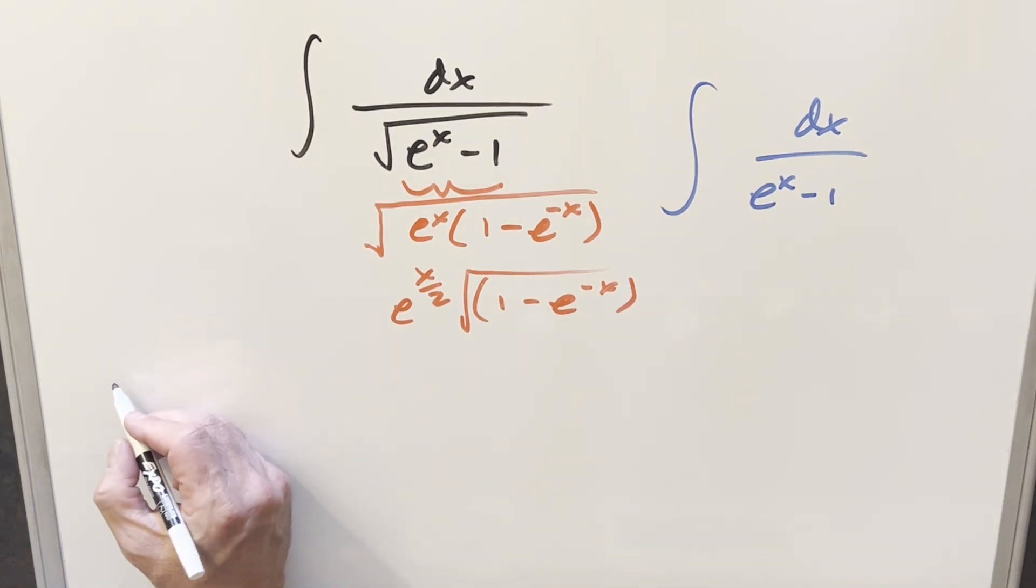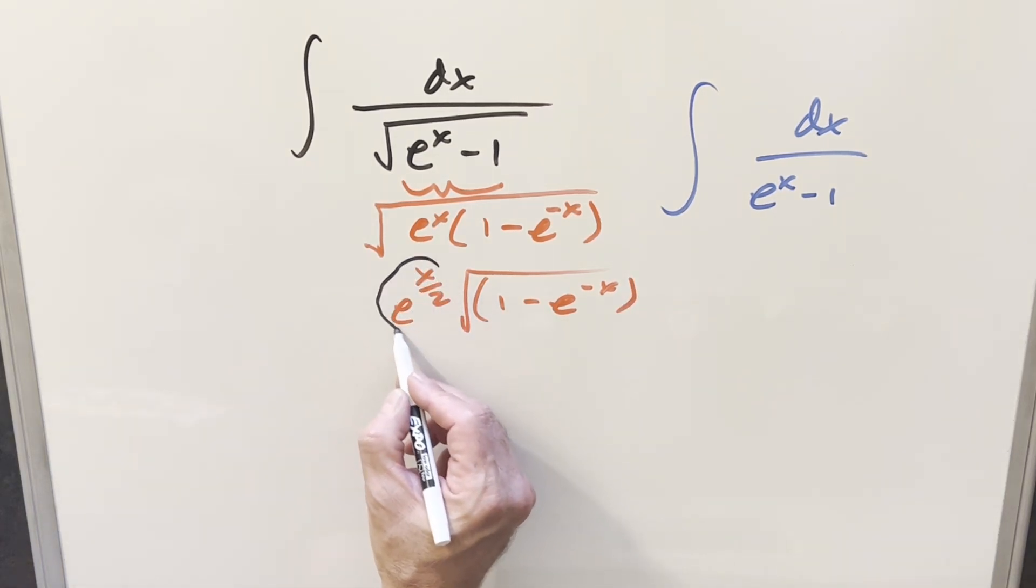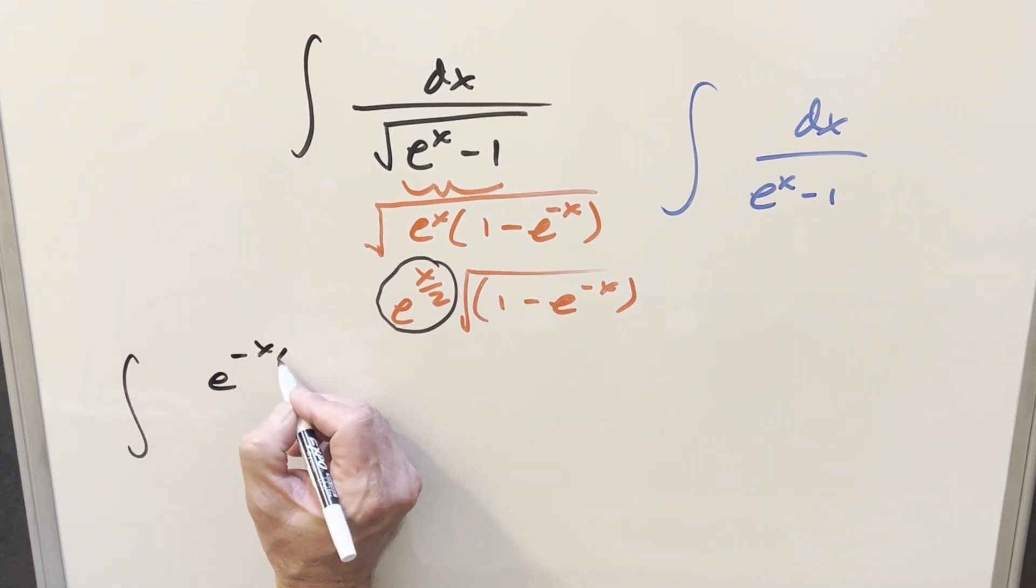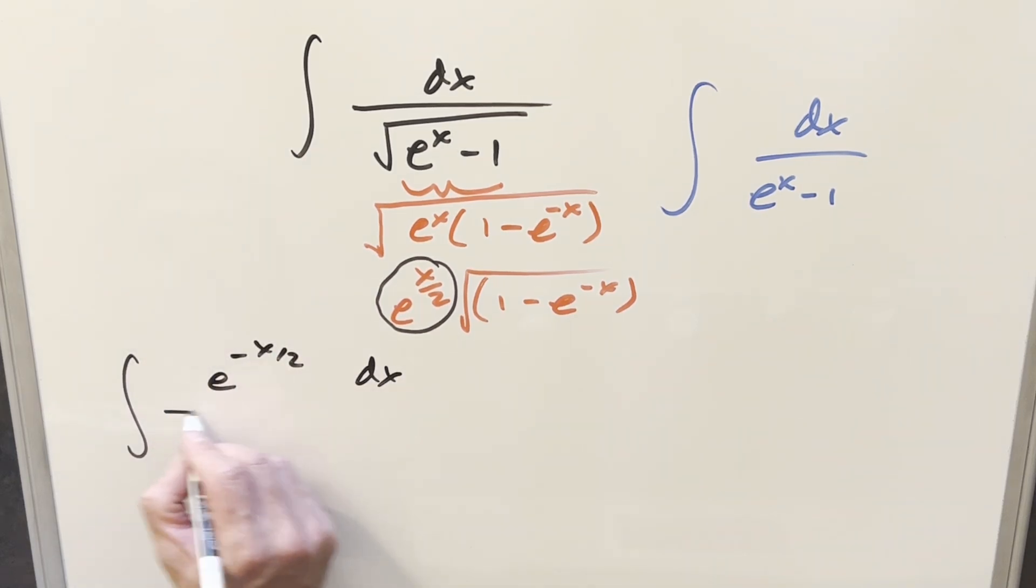So then I'll go ahead and rewrite it and I'll take this part into the numerator. When I do it, we're going to write this as e to the minus x over 2 in the numerator dx, and then we'll have this stuff in the square root.